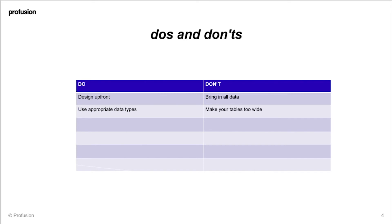Try to make sure that your tables aren't too wide. Only bring in attributes into your tables that are going to be used, and a good rule of thumb is to try and keep tables around the forty column mark or more narrow. Narrow tables tend to be more efficient.